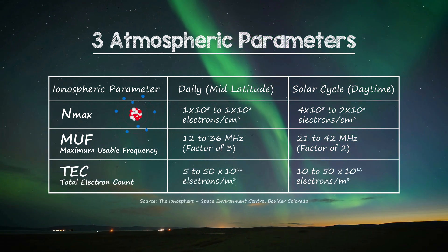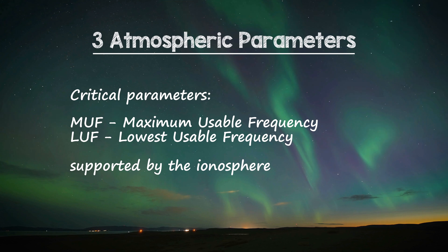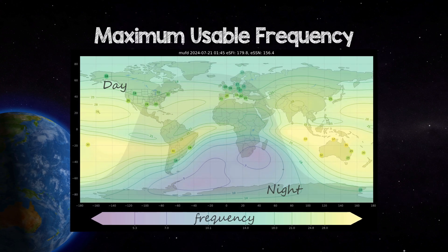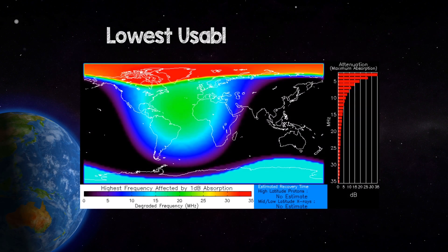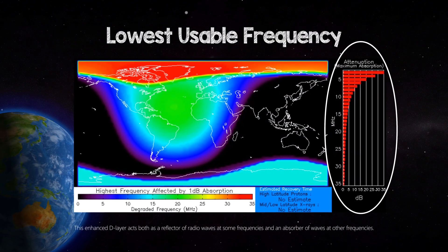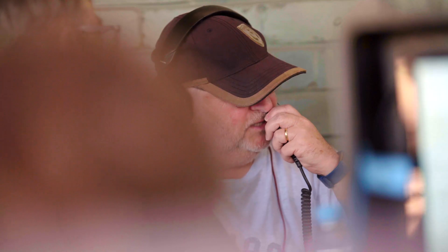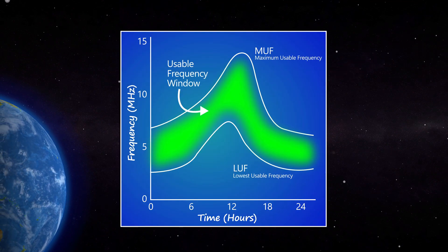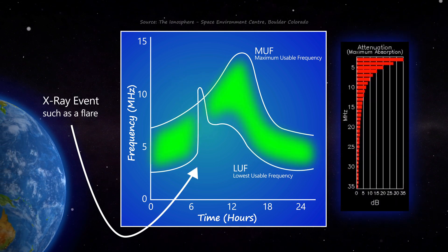The critical parameters are the maximum and lowest usable frequencies, MUF and LUF, that the ionosphere can support. This changes through the day, over the solar cycle, and during geomagnetic disturbances. The LUF is controlled by the amount of absorption of radio waves in the D and E region, and is severely affected by solar flares. The usage frequency window for radio propagation lies between the lowest and maximum usable frequencies. When the window closes, a shortwave fade occurs.